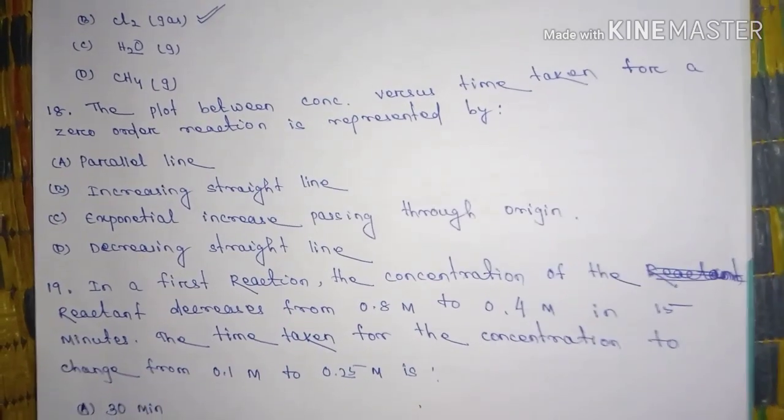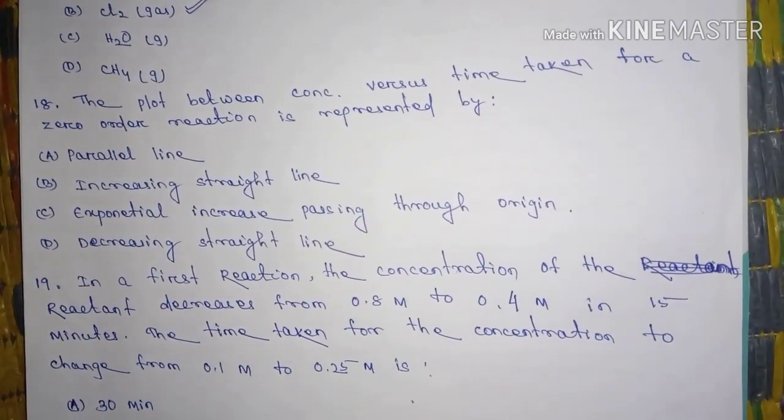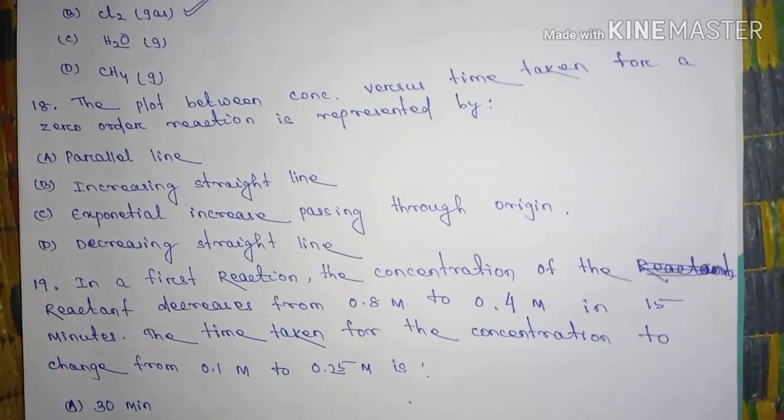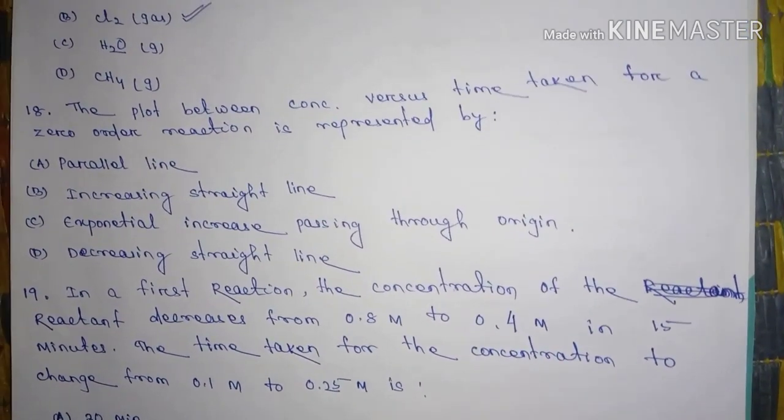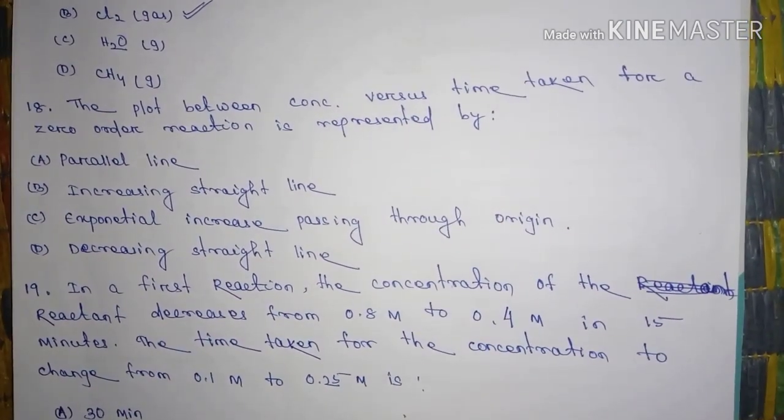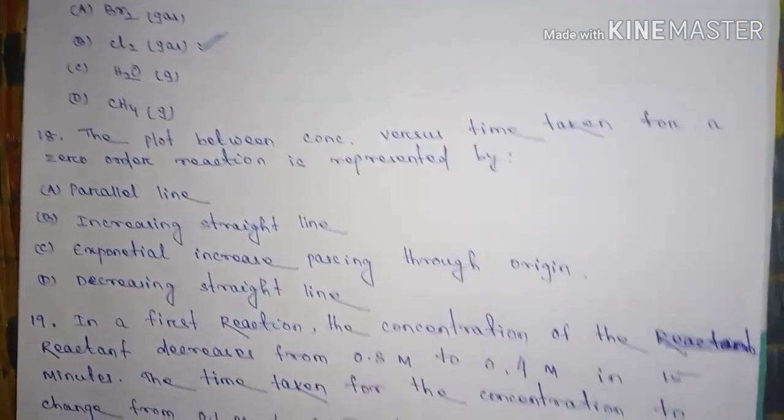Question number 18, the plot between concentration versus time taken for a zero order reaction is represented by, answer is option C.